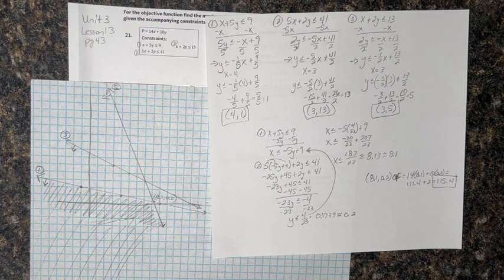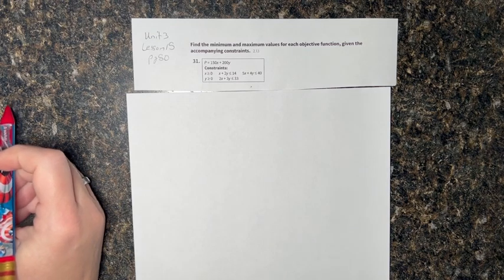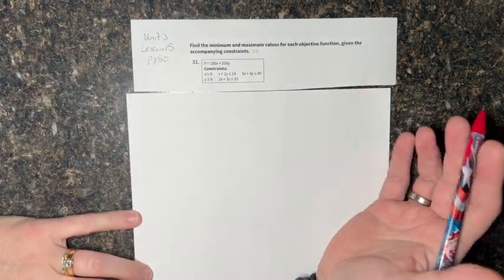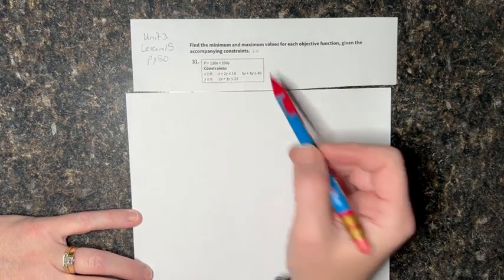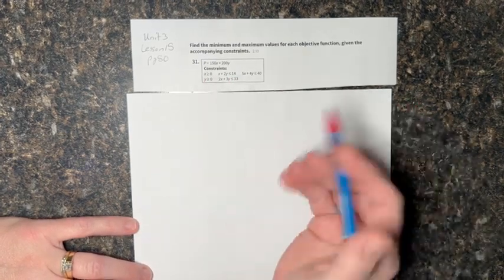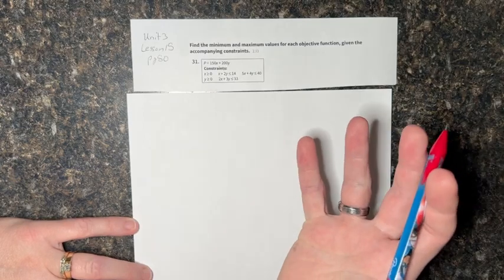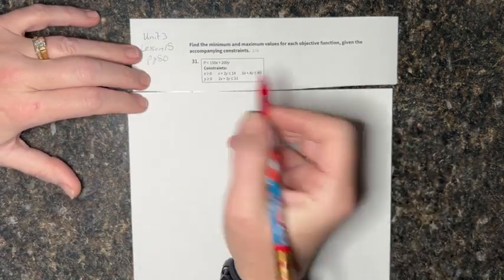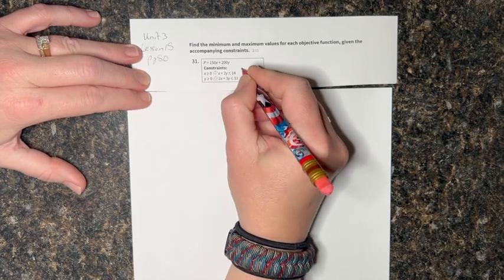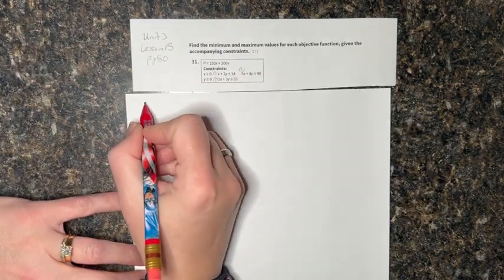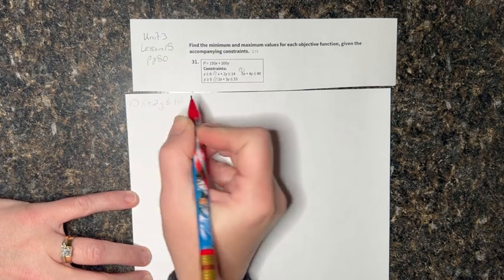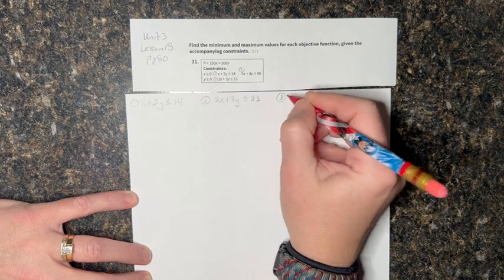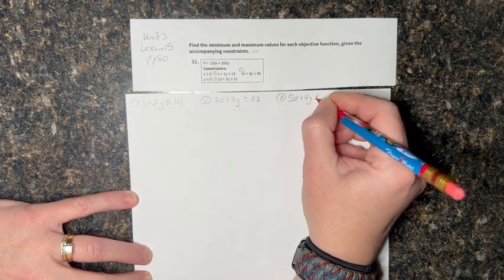Let's take a look at one more problem. This problem is from Unit 3, Lesson 15, page 50, problem number 31. It's asking us to find the minimum and maximum value for each objective function given the constraints. The x and y-axes are part of our constraints this time, which limits where we're going. I have three equations — I'll label them 1, 2, and 3. Equation 1 is x plus 2y is less than or equal to 14.